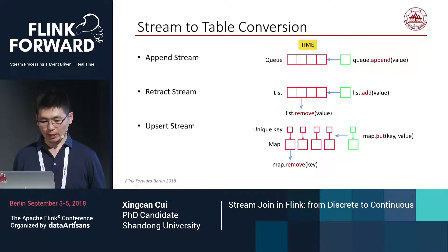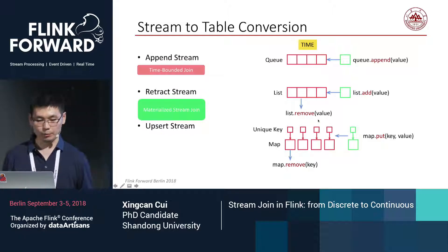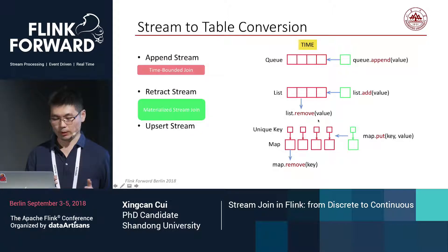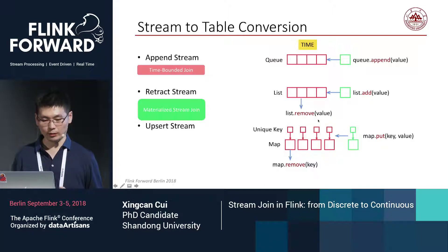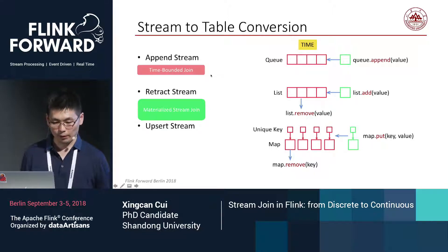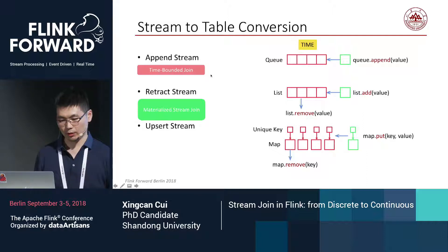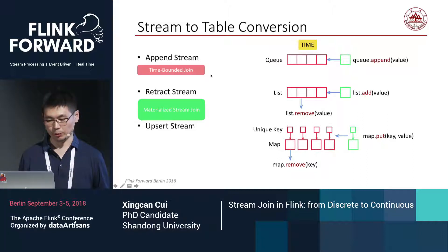For these three kinds of streams, Flink has provided two corresponding kinds of joins: the time-bounded join and the materialized table join.